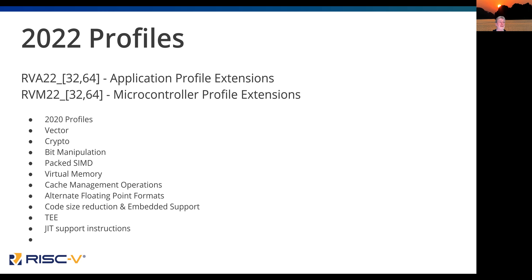Also in the pipeline: alternate floating point formats like BFloat16, which are very important for ML and embedded use cases. There's a more general code size reduction and embedded support effort finding instructions that shrink the footprint — a very active team. Trusted execution environment work covers PMP, IO PMP, and other things. There's also JIT support instructions. We call it 2022 because all the work is done in 2021, but it becomes official on January 1st, 2022.